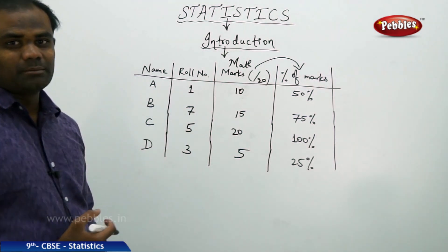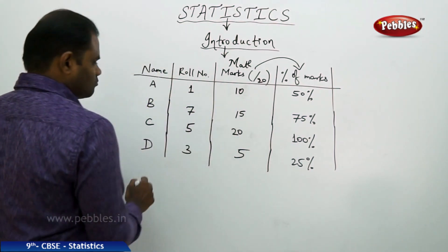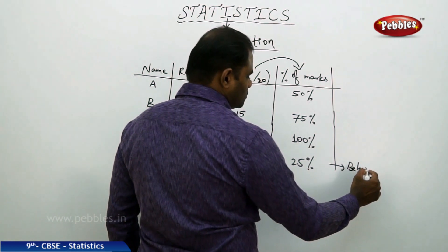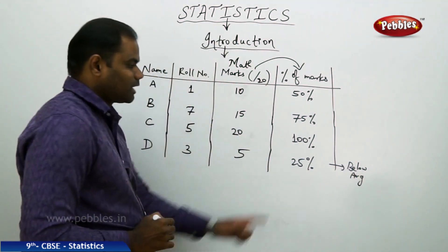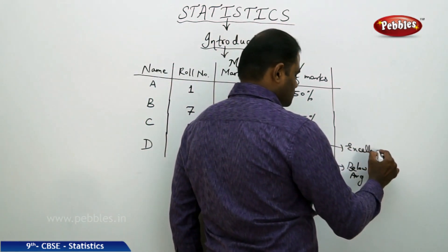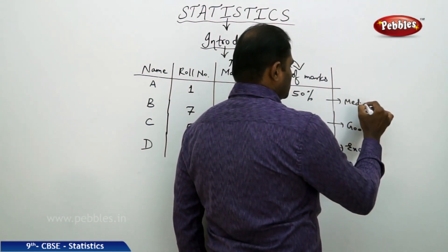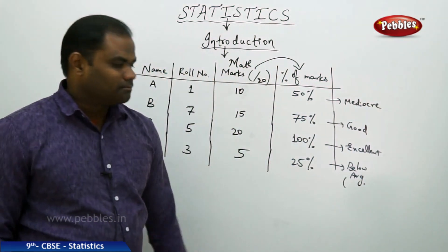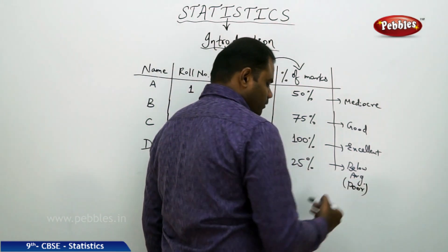This gives me a clear picture that the student who got 25% is below average or at low performance. And we can categorize them as excellent, good, mediocre, and poor or very poor.